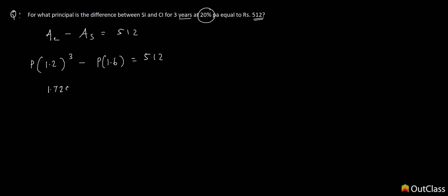1.728, so P × 0.128 = 512. Therefore, P = 512 ÷ 0.128. Since 512 ÷ 128 = 4, the answer is Rs. 4,000.